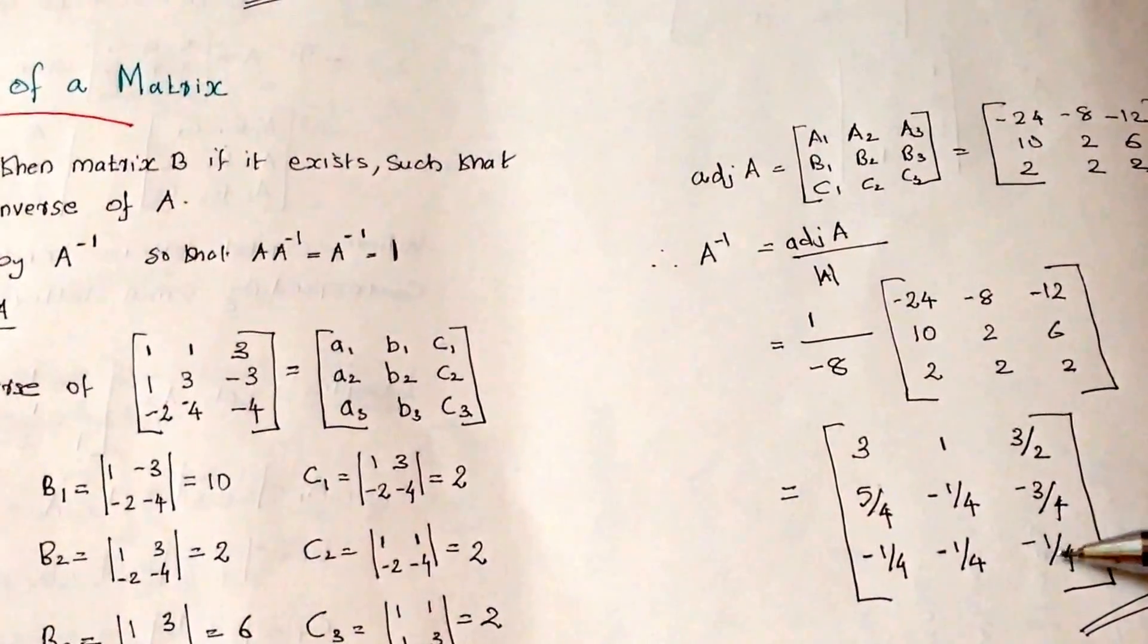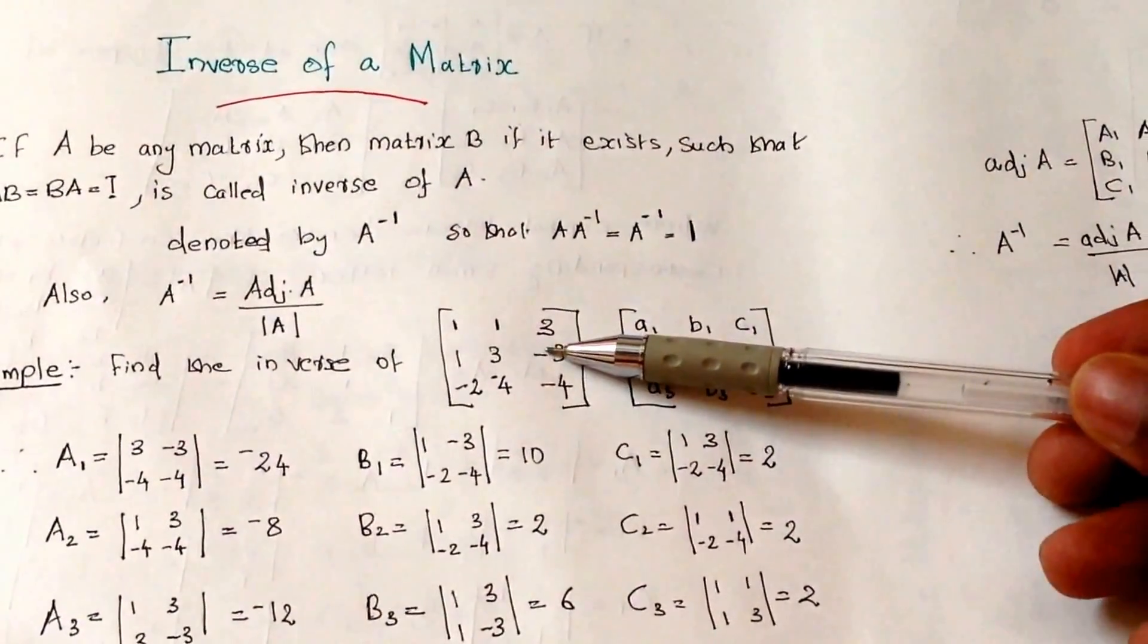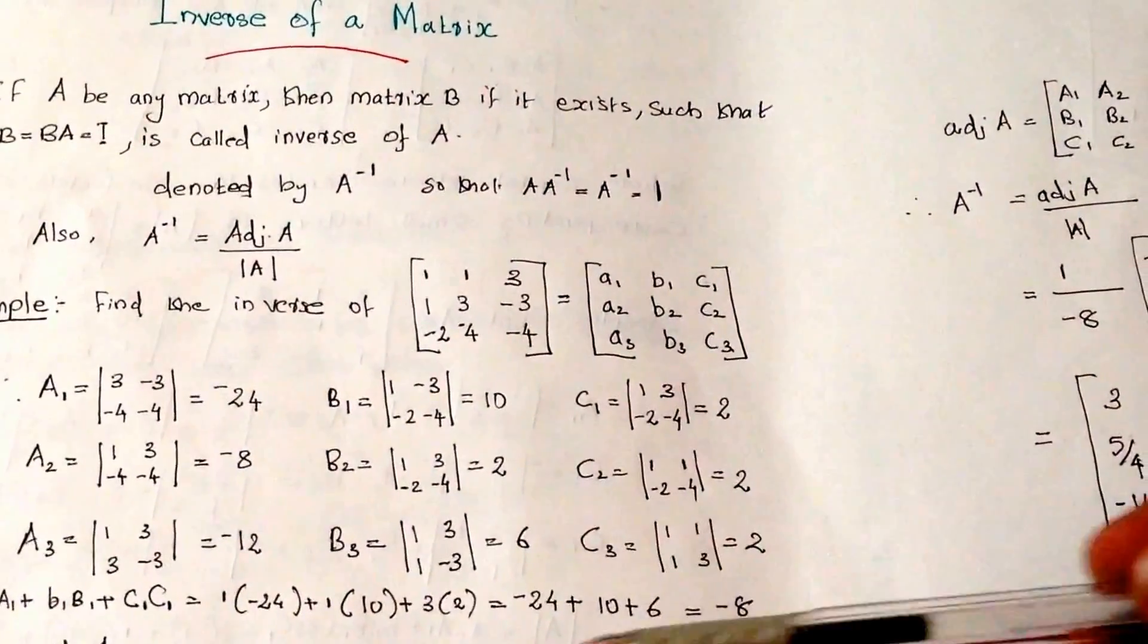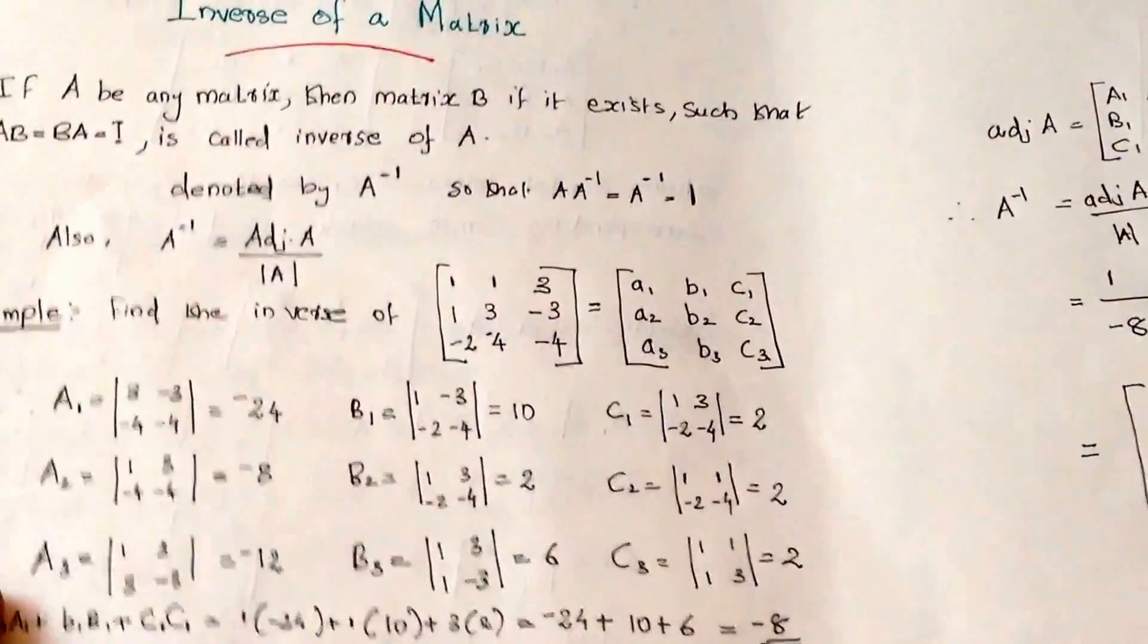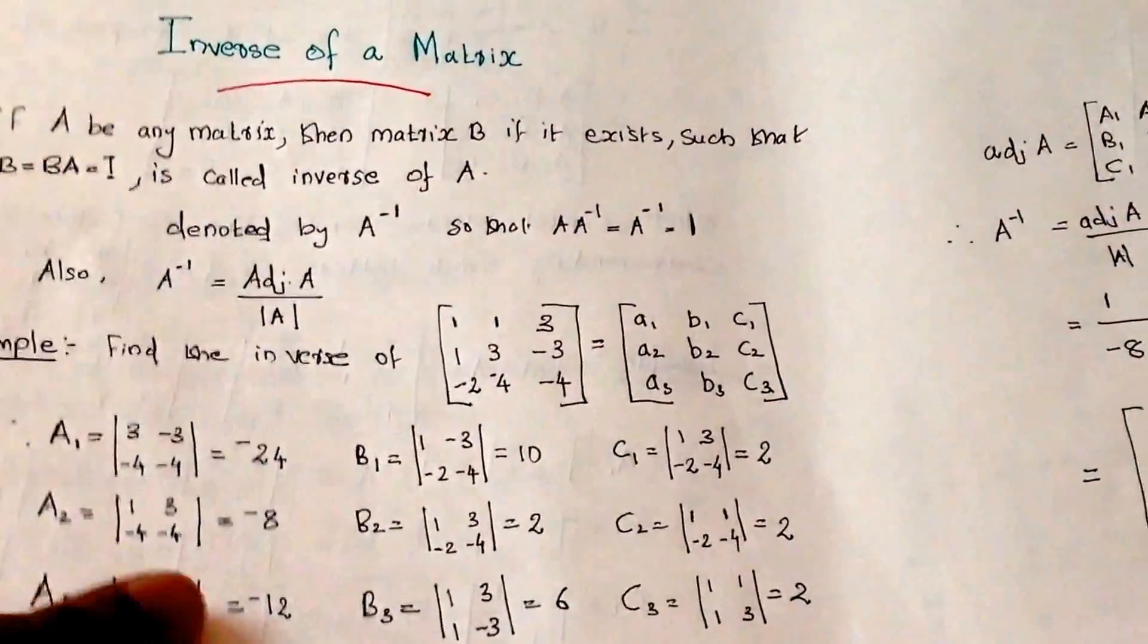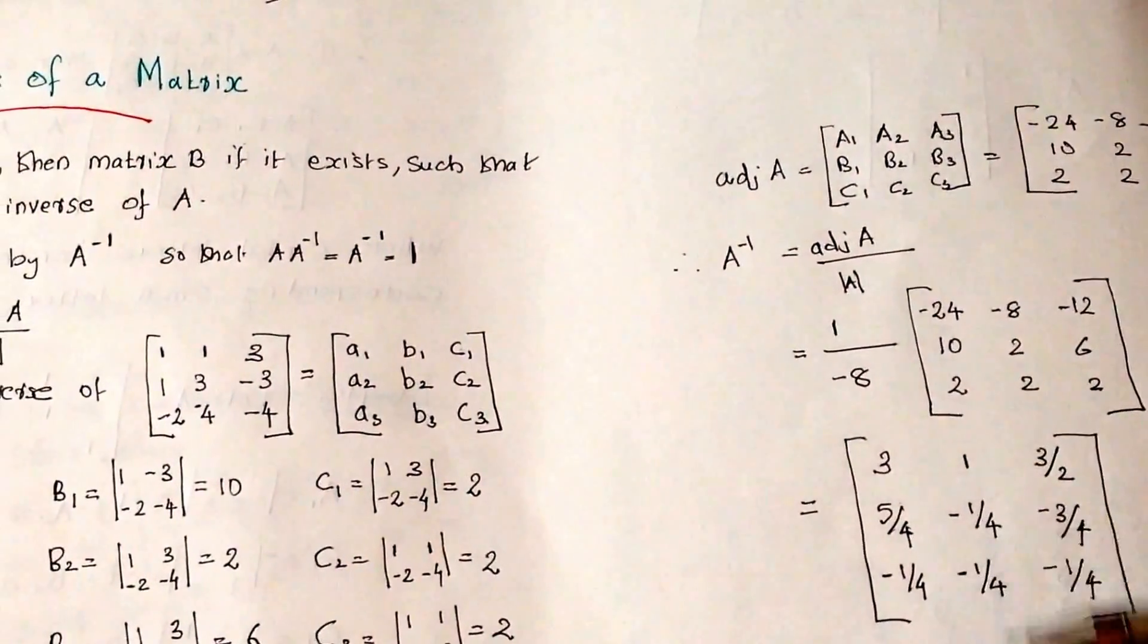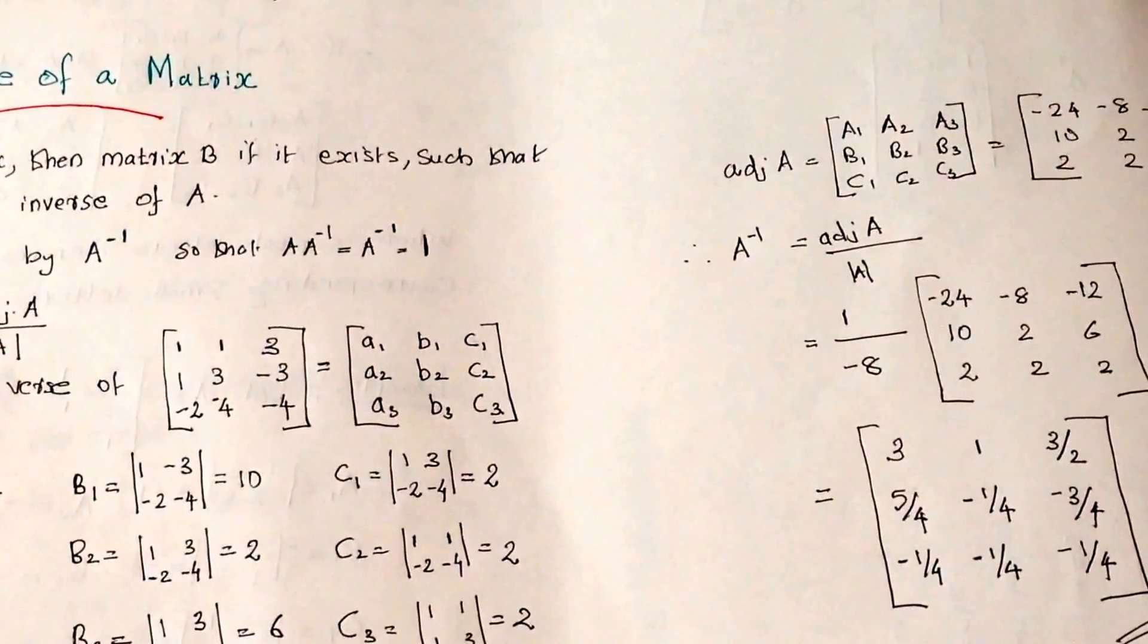What we have done? First we have taken the matrix and found the cofactors, then we have found the determinant of the particular matrix and adjoint A. Then finally A inverse equals adjoint A by determinant A. So we got these values. I hope this video is helpful for understanding the same.